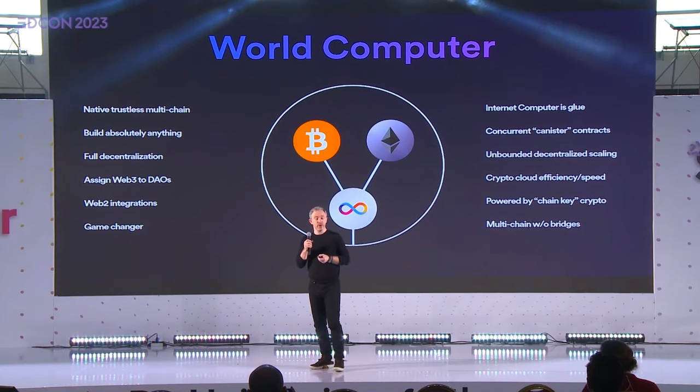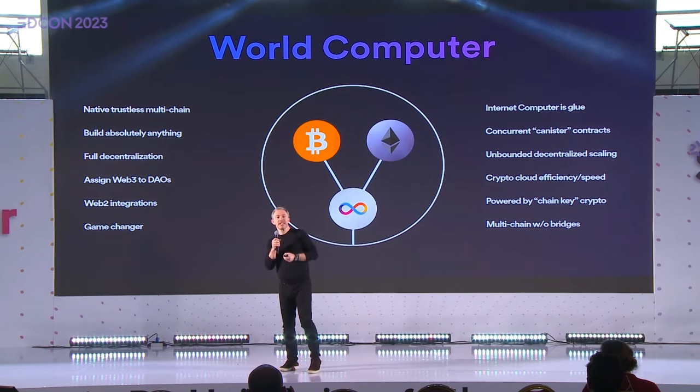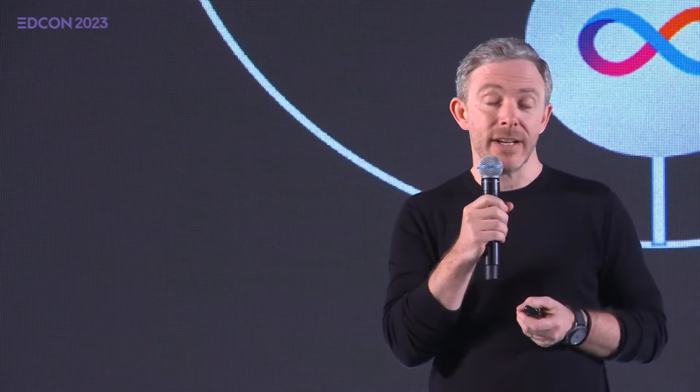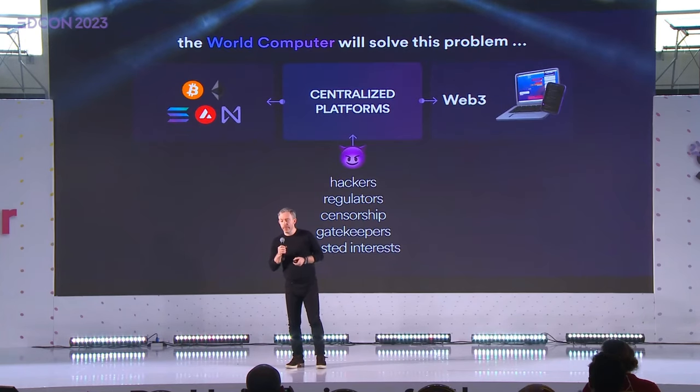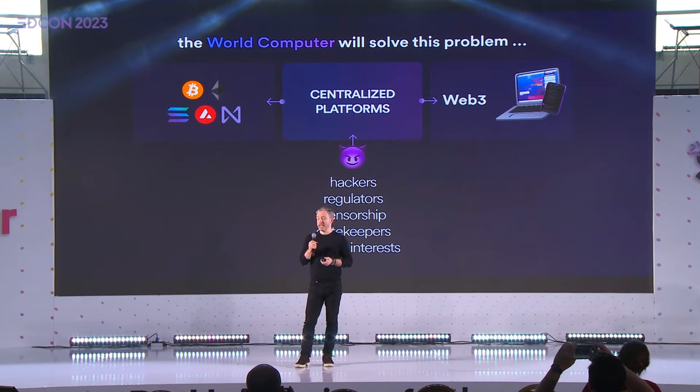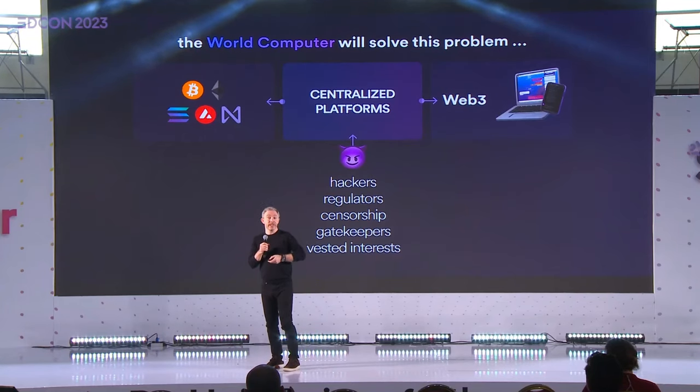The internet computer is the glue that makes this possible. It has something called concurrent canister smart contracts, which remain deterministic. It gives you unbounded scaling and crypto cloud efficiency and speed, and it's powered by something called chain key crypto. The objective of the internet computer project and the DFINITY Foundation generally is to solve the fundamental problem where Web3 still primarily runs on centralized technology — and that's where hackers head, regulators head, censors head, gatekeepers head, vested interests head. The continued use of centralized technologies is the root of most of the problems that occur.